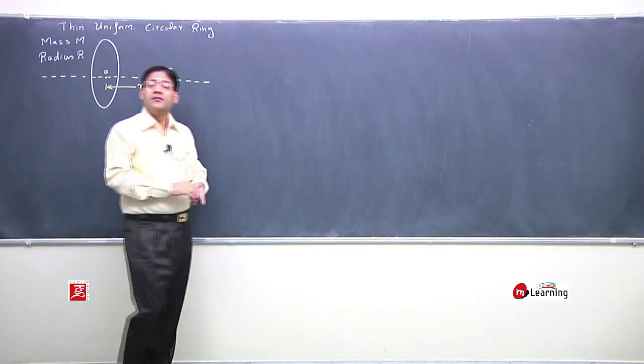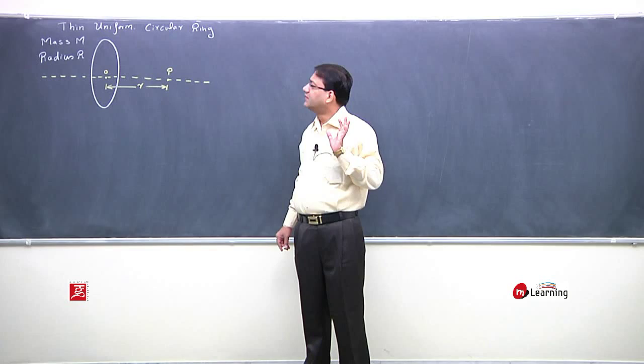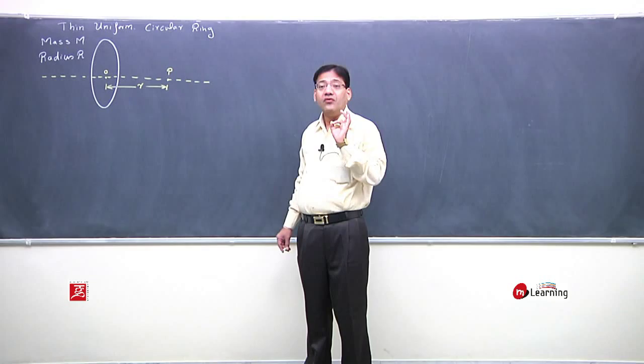Now, this is a mass system. The mass system is a uniform circular ring. This axis of ring, which is at a distance r from its center.